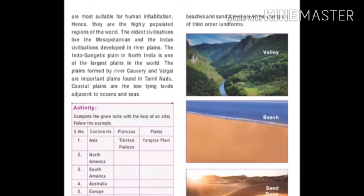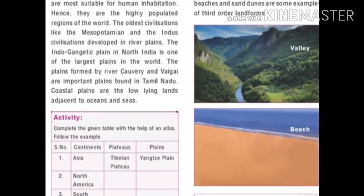The Indo-Gangetic Plain in North India is one of the largest plains in the world. The plains formed by the Cauvery River and Vaigai River are some important plains found in Tamil Nadu. Coastal plains are low-lying lands adjacent to oceans and seas.